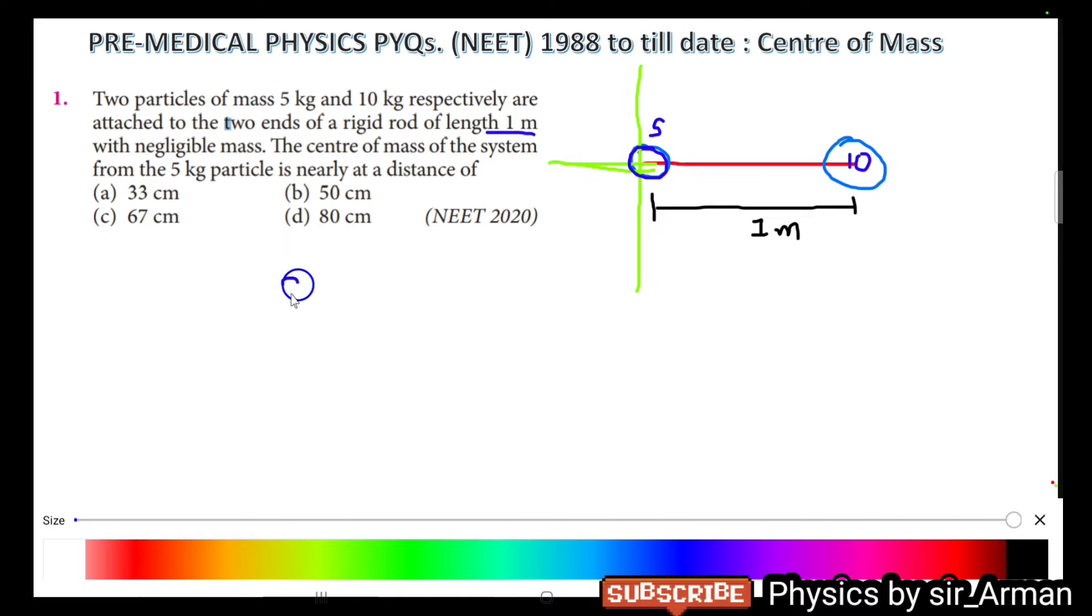What is the formula for center of mass? x_cm equals m1*x1 plus m2*x2 divided by m1 plus m2. As 5 kg is at the origin, its distance x1 equals 0. So 0 plus m2 is 10 kg, x2 is 1 meter, divided by 5 plus 10, that is 15.